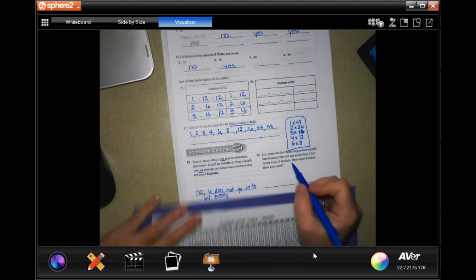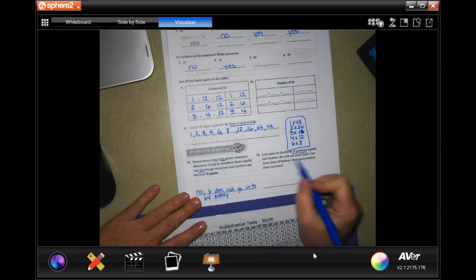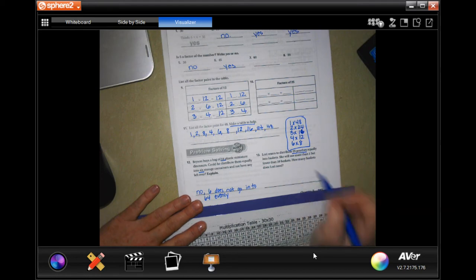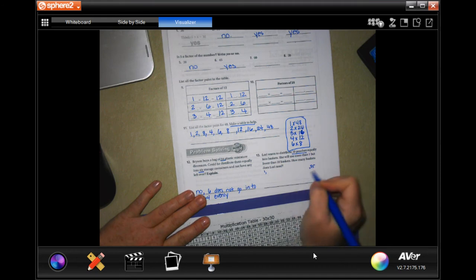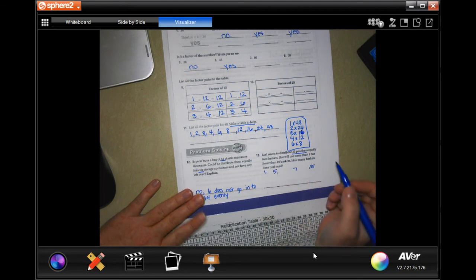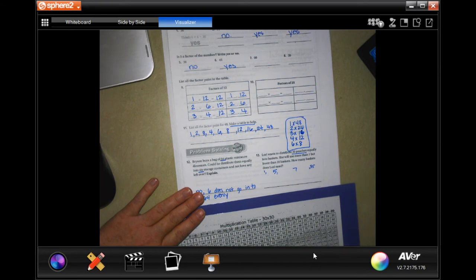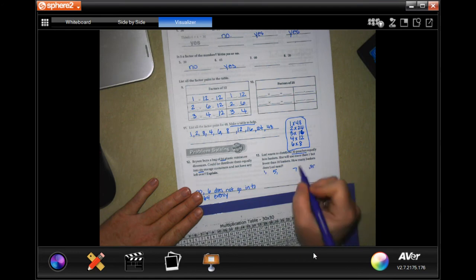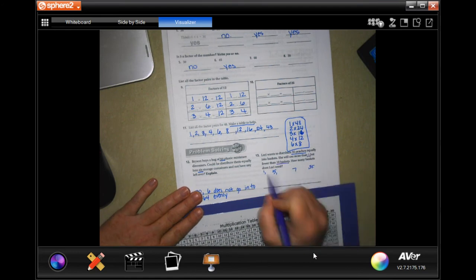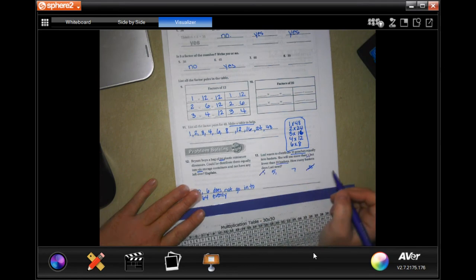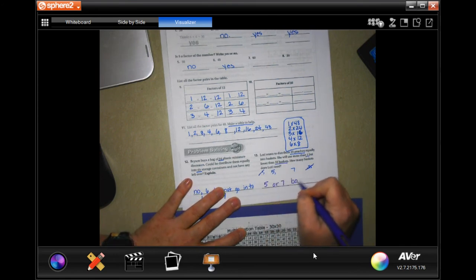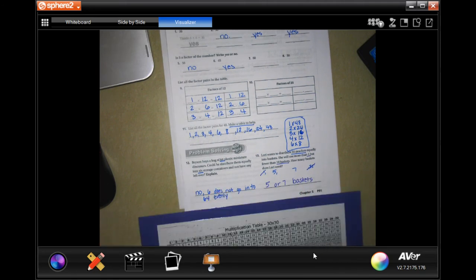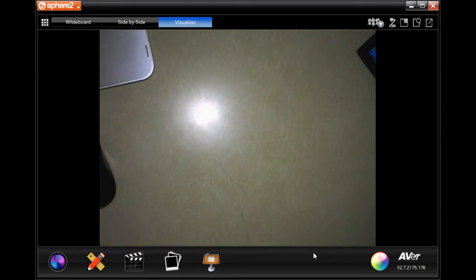The next one says, Lori wants to distribute 35 peaches equally into baskets. She will use more than one, but fewer than 10 baskets. How many baskets does Lori need? Well, all right. Two doesn't go into 35. Three doesn't go into 35. Four doesn't. Five does. Five times seven. So, they said that Lori would use more than one, but less than 10. So, more than one, less than 10. So, she could have five or seven baskets. All right. We're going to go on to the back. You guys are going to do the lesson check, just like always.